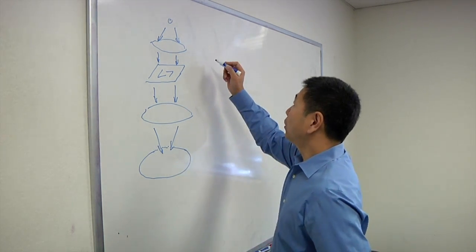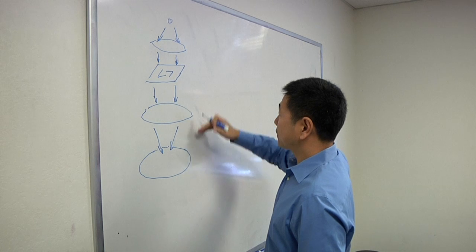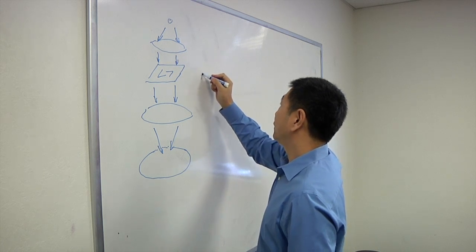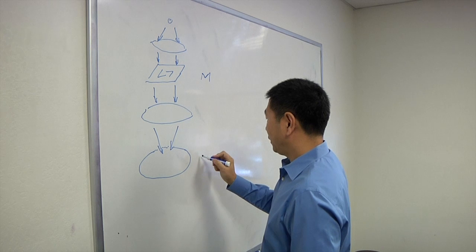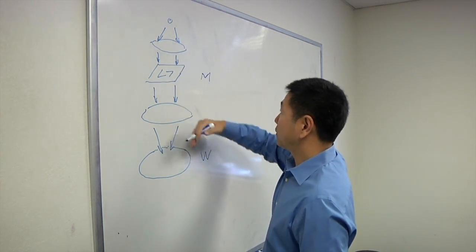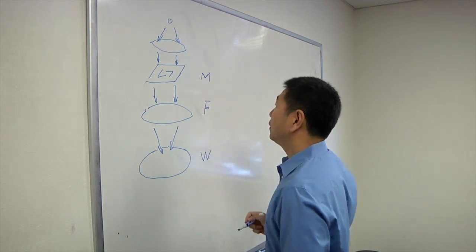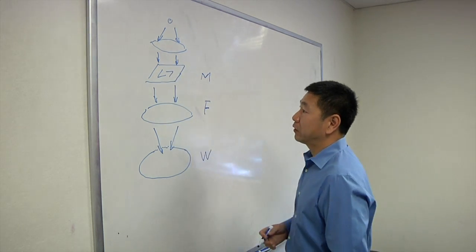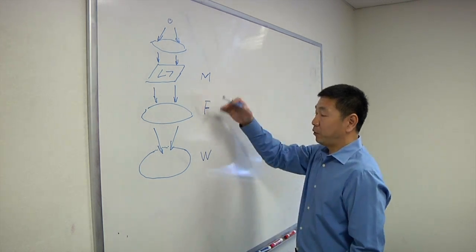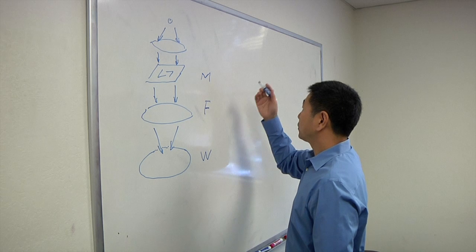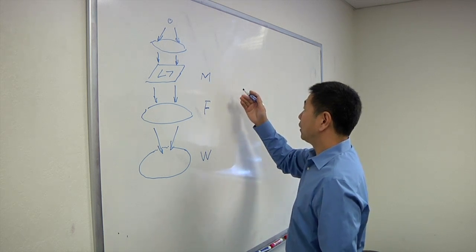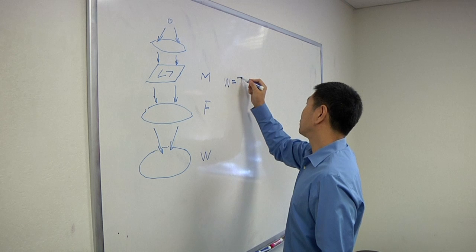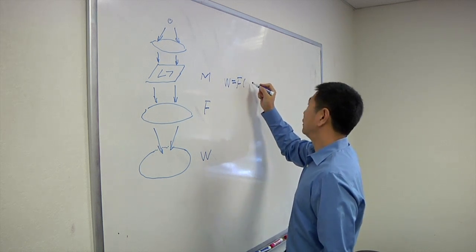This forward process is well known. So if we see the mask represented by M, the wafer is W, and this forward process we can call it a function F. This system is basically a partial coherent optical system and people can model that very nicely. So the lithography process, if you see it mathematically, would be wafer pattern equals a forward function of mask pattern.